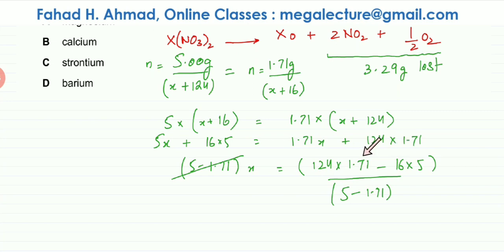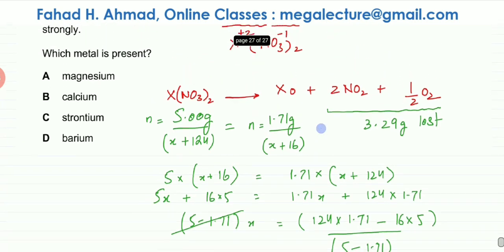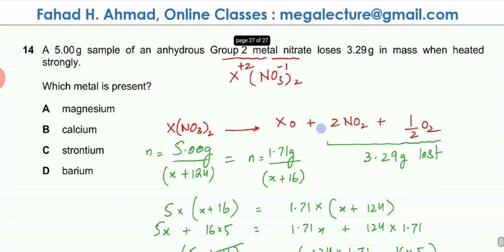So here I've worked out everything, and if I solve for X now, and my calculator, the value that I'm getting is 40.1. So that means that the AR of X, after solving this, it comes out to be 40.1.